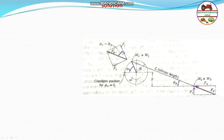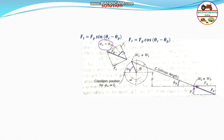The resultant of F_r and F_t will be F_p, and the angle between F_r and F_p is theta_c minus theta_p. Therefore, F_r will be equal to F_p times cosine of (theta_c minus theta_p), and similarly F_t will be equal to F_p times sine of (theta_c minus theta_p).